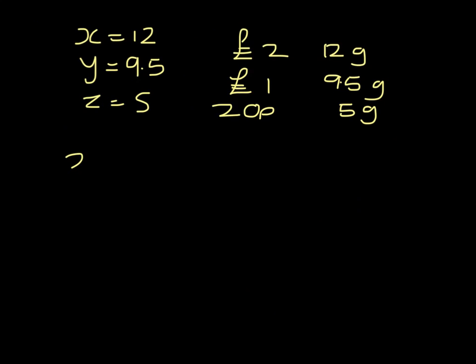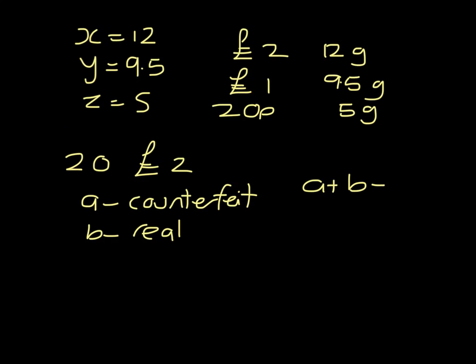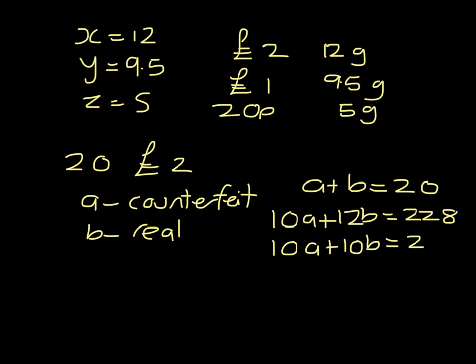David has 20 £2 coins. I'm going to say that A are counterfeit and B are real. That means that A plus B must equal 20. Counterfeit coins weigh 10 grams and we worked out that real coins weigh 12, and that total has to be 228. So if I multiply the first equation by 10, I have that 10A plus 10B has to equal 200.